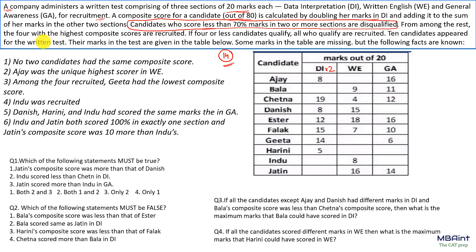Among the rest, the four with the highest composite scores are recruited. If four or less qualify, all are recruited. We have information for 10 candidates. The first condition is that no two candidates have the same composite score — this is an instructional point, not the opening statement to solve the set.